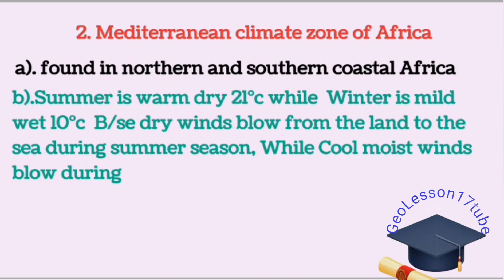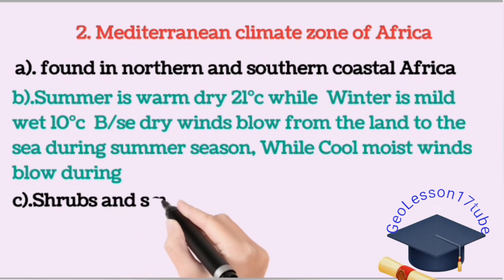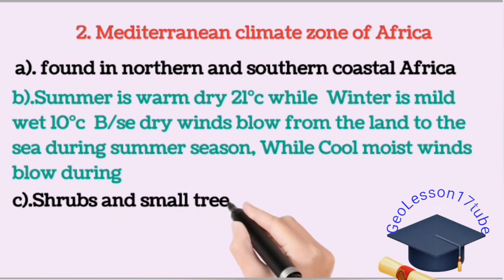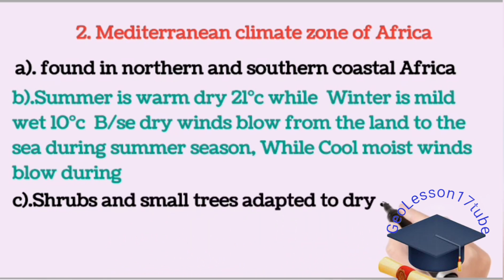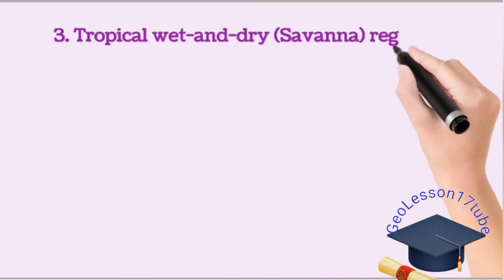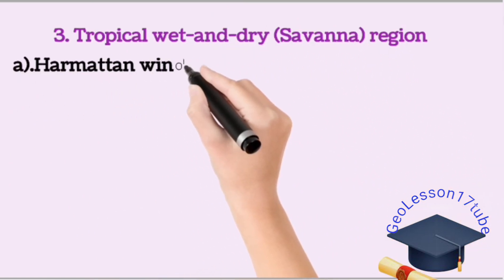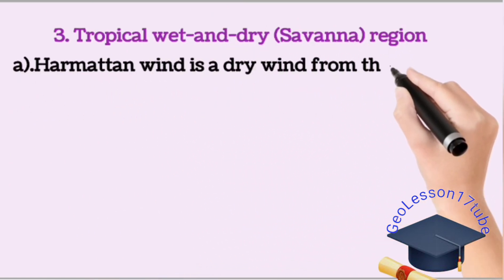The reason is cool, moist winds blow during winter in this region, leading to moisture. The types of plants dominantly found in the Mediterranean climate region are shrubs and small trees. Next is the tropical wet and dry, or savanna region.